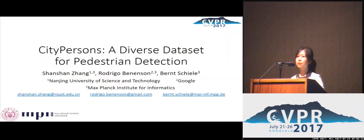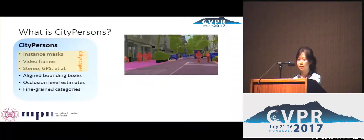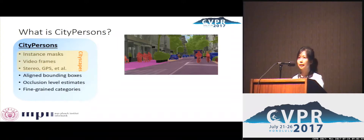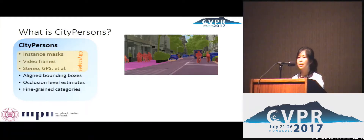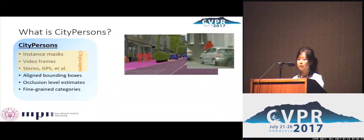In this work, we propose a new dataset for pedestrian detection, namely CityPersons. CityPersons was built on top of the Cityscape dataset, which was created for semantic segmentation in urban traffic scenes. On CityPersons, we provide additional annotations for pedestrian detection. By using the masks for each instance person, we have created high-quality bounding box annotations which are aligned to the full body center.